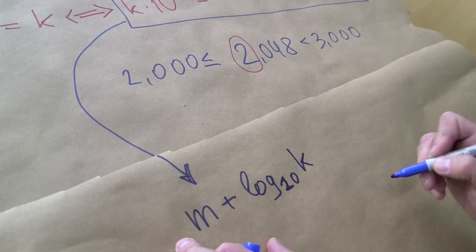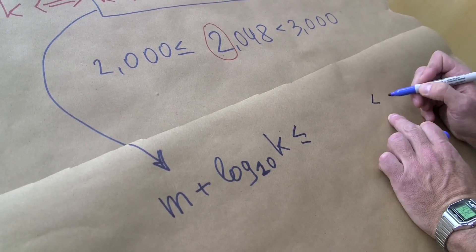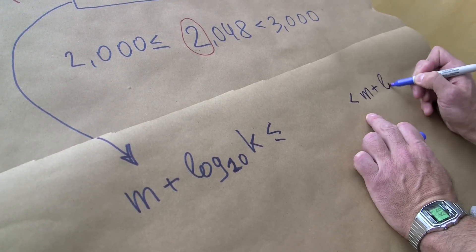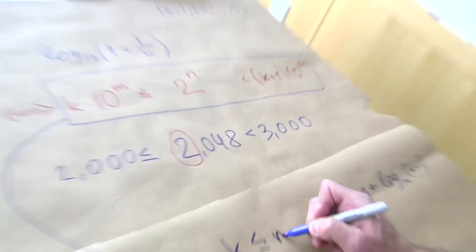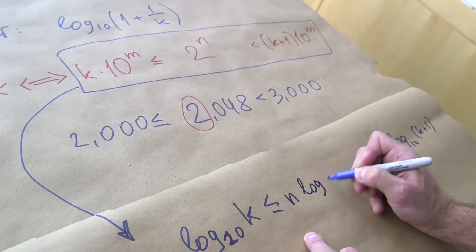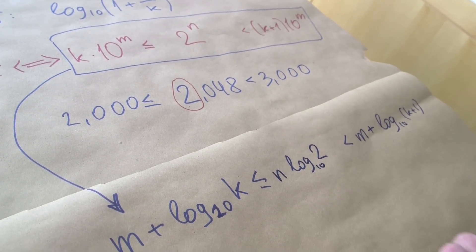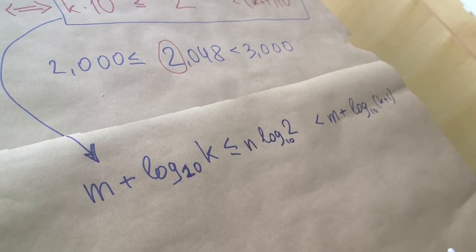This is base 10. Here we have also m plus log base 10 of k plus 1. And here we have log of this which is just n times log 2, also base 10. So log 2 base 10 is going to be very important for us.